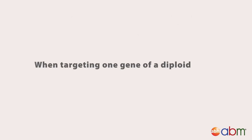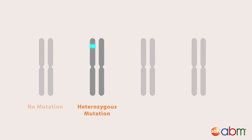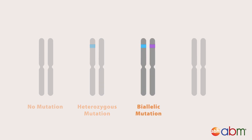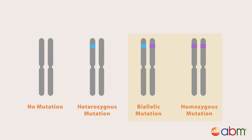When targeting one gene of a diploid cell, there are four possible outcomes: 1. No edit occurs. 2. One allele is edited — this is called a heterozygous mutation. 3. Both alleles are edited but carry a different sequence — this is called a biallelic mutation. Or 4. Both alleles are edited and carry the same sequence — this is called a homozygous mutation. In most cases, a biallelic or homozygous mutation is desired in order to be sure the gene of interest is completely knocked out.